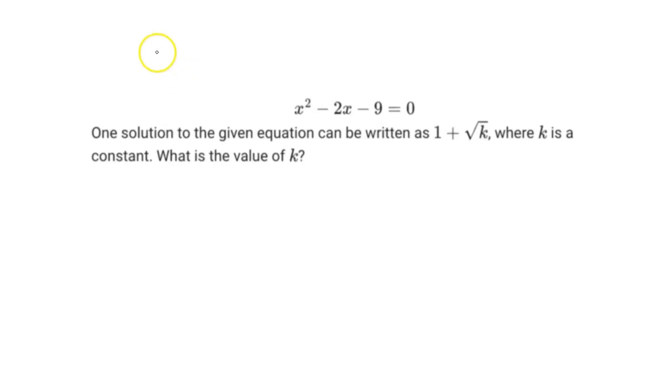So this example says one solution to the given equation can be rewritten as 1 plus square root k, where k is a constant, what is the value of k?